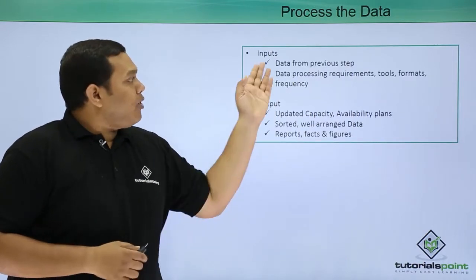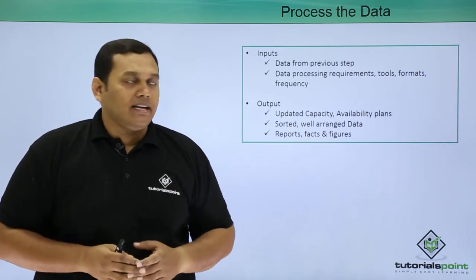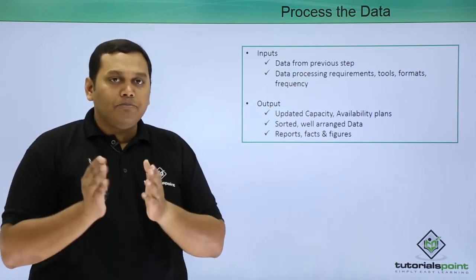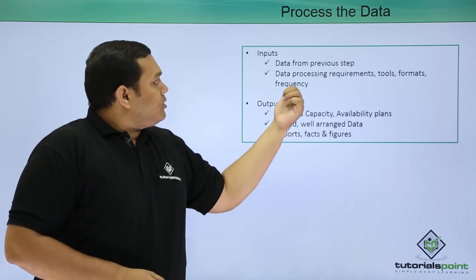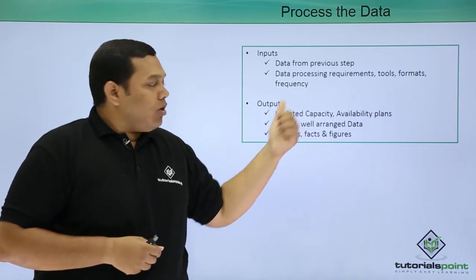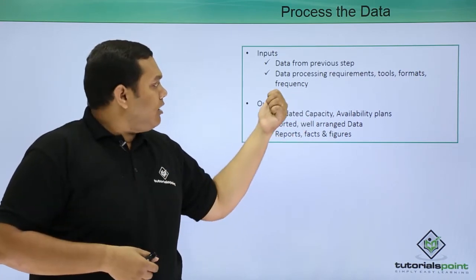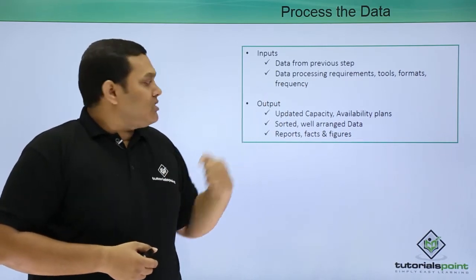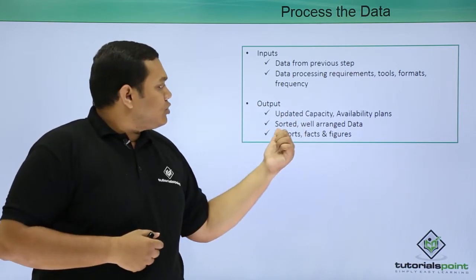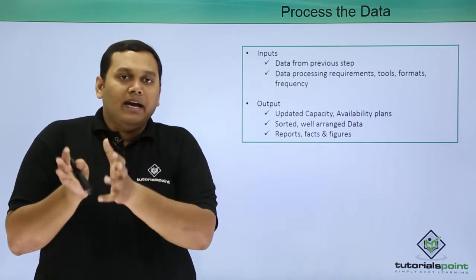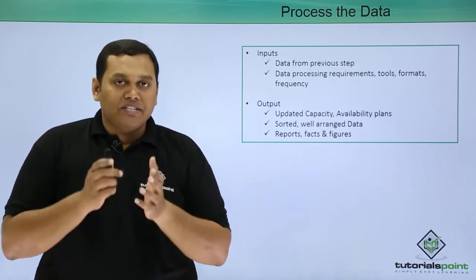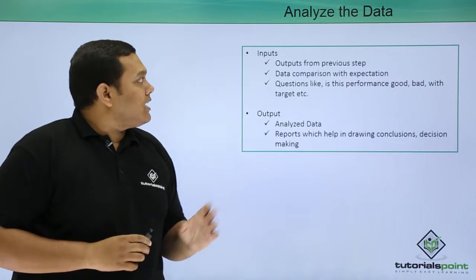The fourth step is processing the data. The inputs include data from the previous step as well as data processing requirements, tools, formats, and frequency. The outputs are updated capacity and availability plans, sorted and arranged data, and reports with facts and figures also available in graphical presentation.